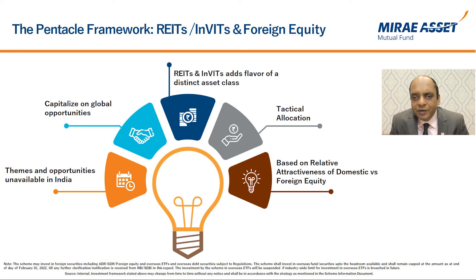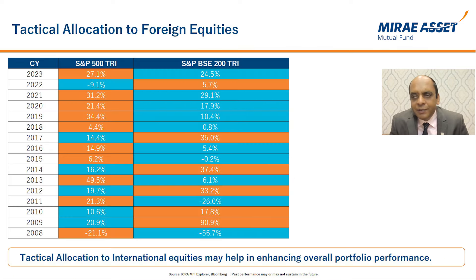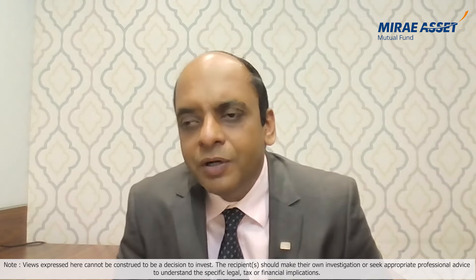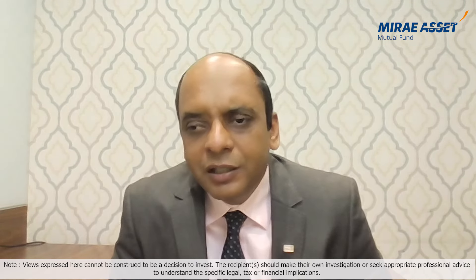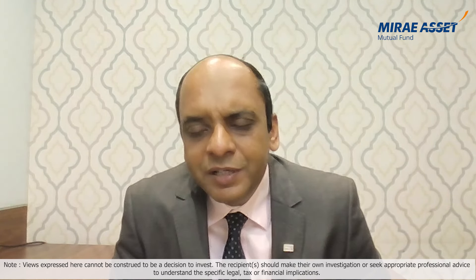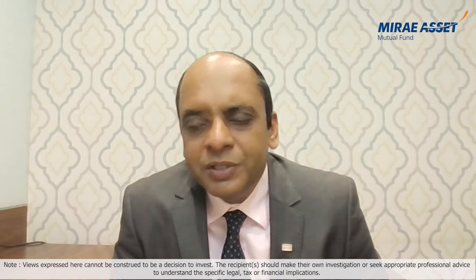Investment in foreign equity will be based on the relative attractiveness of foreign equity versus domestic equity. For the majority of the time, equity is likely to have a meaningful allocation compared to other asset classes in this fund, so it's important to understand our philosophy toward equity portfolio building. For stock selection we use the BMV criteria — Business, Management, and Valuation. On the business side, we look at parameters like top-line growth, which should be at least double-digit with visibility for the next five to seven years.